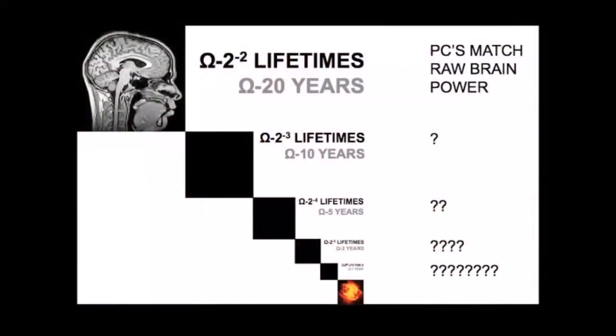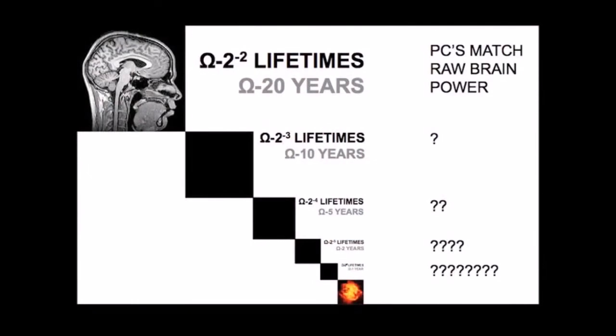How will it continue? Many claim that around 2020 — one quarter lifetime before Omega — PCs will match the raw computational power of a human brain. Then ten years before Omega, five years, two years — obviously history is converging. Here's another pattern showing that convergence, this time based not on human lifetimes but on the main breakthroughs in computer science.